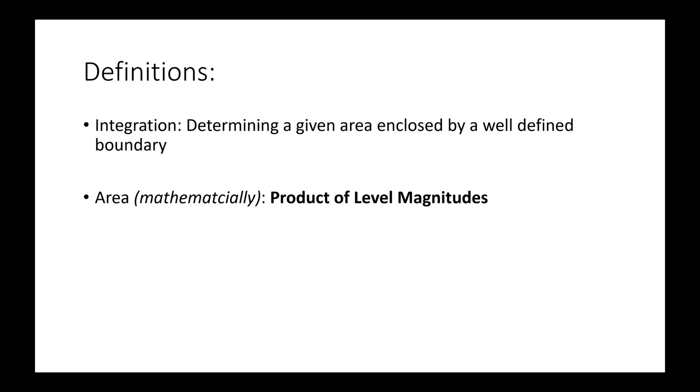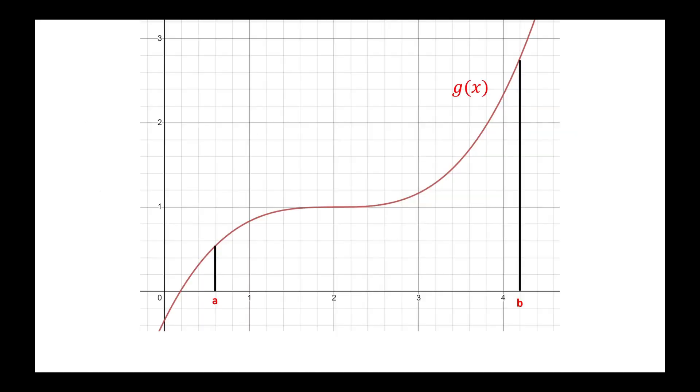So to extend this idea of finding areas of shapes to functions, it is logical that the area under a given function would just involve finding the level magnitude of all its heights and then multiplying it by the interval width.